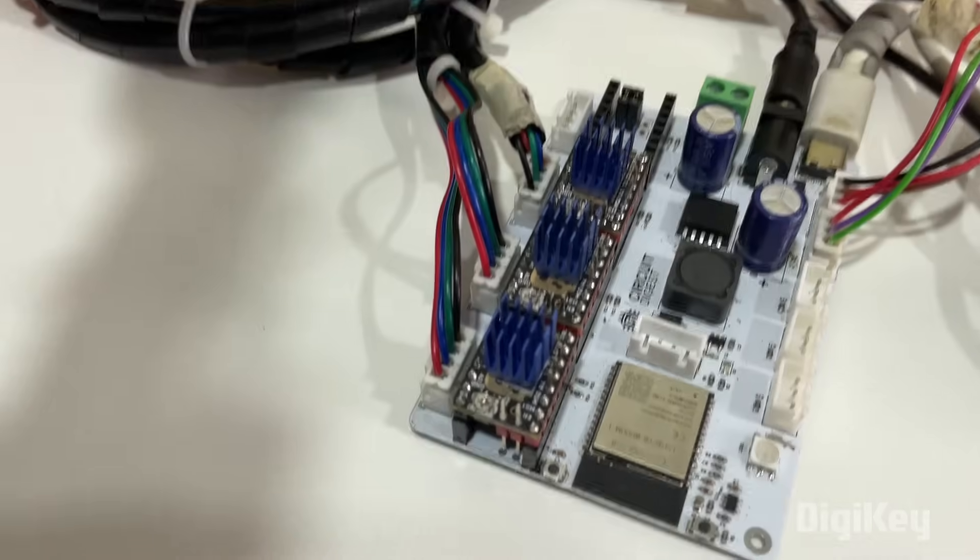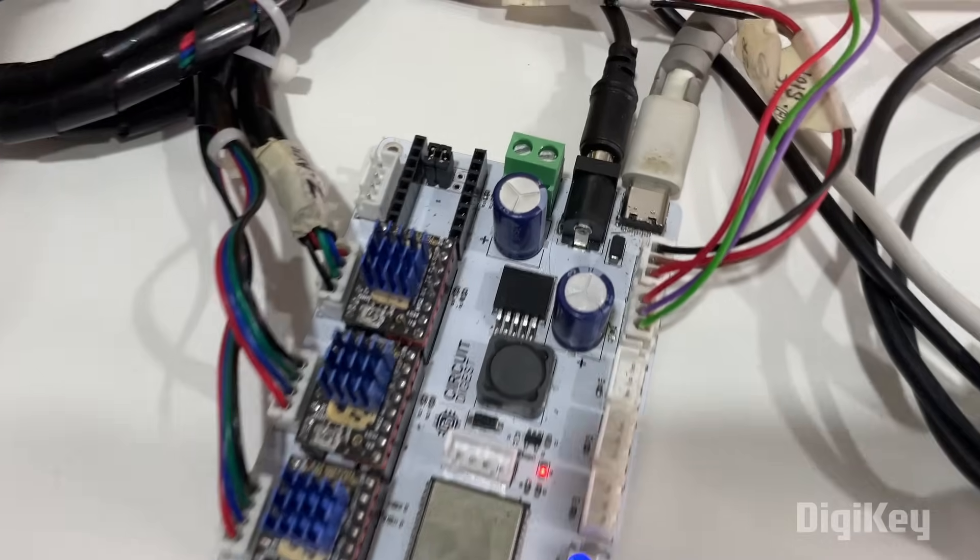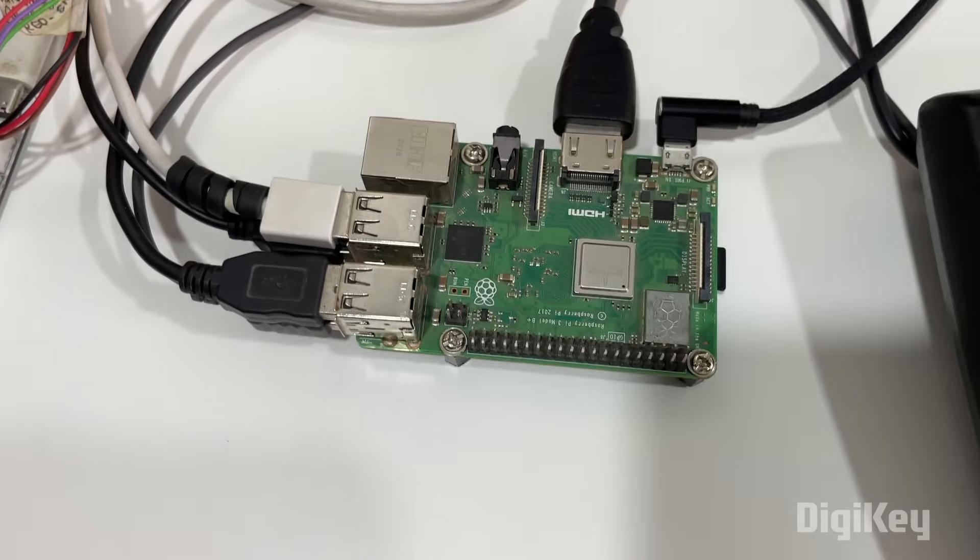Now that we have everything ready, let me show you how the project works. Make sure the camera and the ESP32 controller board is connected to the Raspberry Pi. Provide a separate power supply for the controller board to drive the robotic arm and power on the Raspberry Pi.